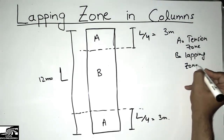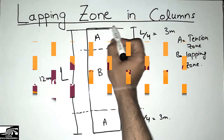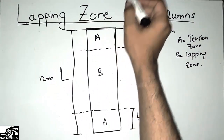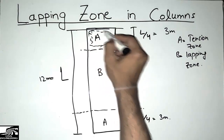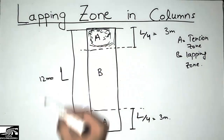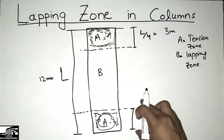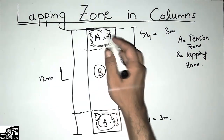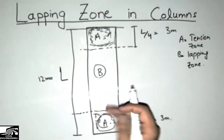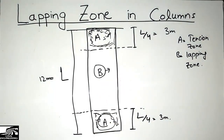Thinking about the loads on the column — for example, there is a slab or beam on top of the column — the loads are coming and bending stresses are maximum at point A. The maximum tension is here at A. Similarly, at the bottom of the column, the maximum stresses occur at point A, at L/4 from the bottom as well as from the top. There are no such high stresses at point B, the B zone.